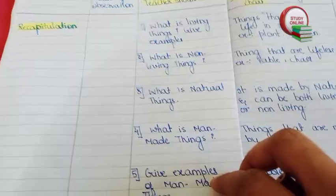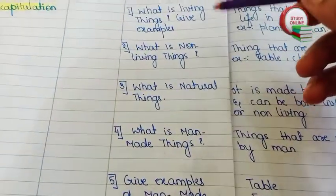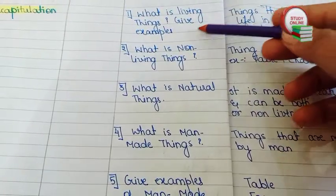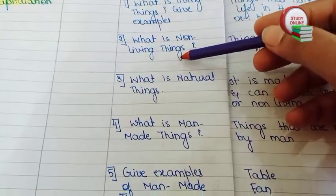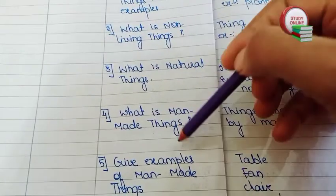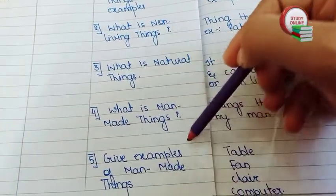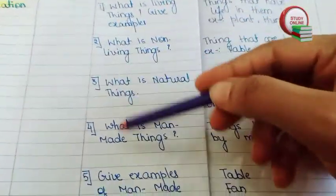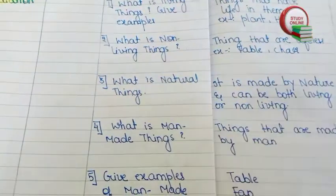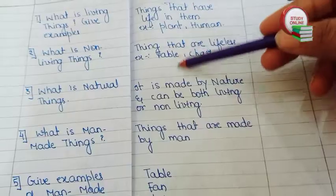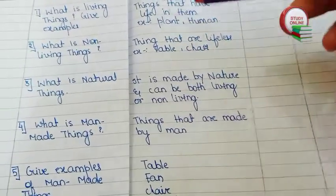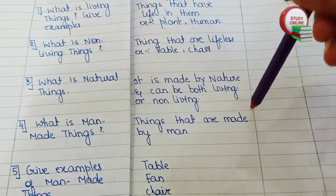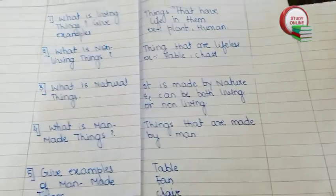Here you can see the recapitulation part with five questions: What are living things? Give an example. What are non-living things? What are natural things? What are man-made things? Give examples of man-made things. Like this, we have to ask questions to students, and here is the list of answers we expect from students.